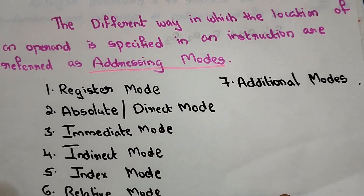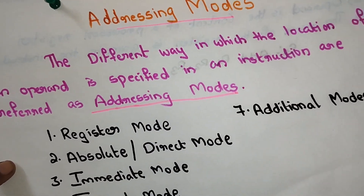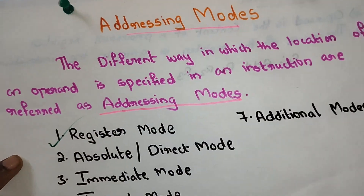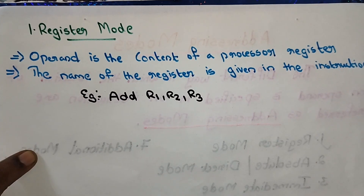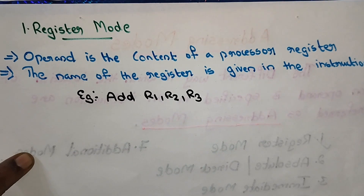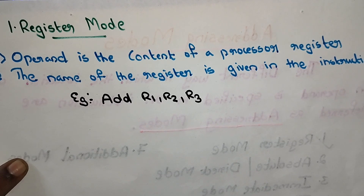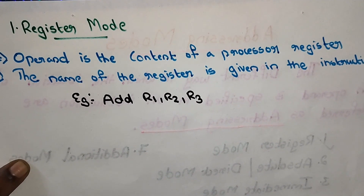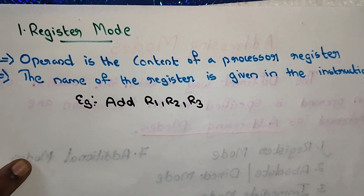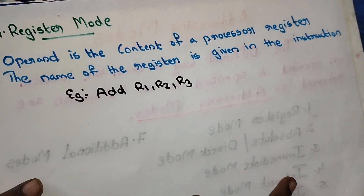We will look at the first type of addressing modes. The first one is register addressing mode. In register addressing mode, the operand is the content of a processor register. The name of the register is given in the instruction.